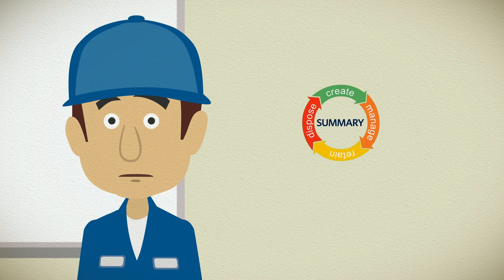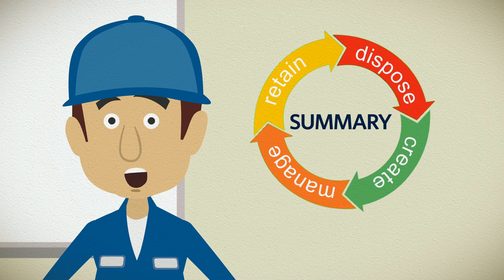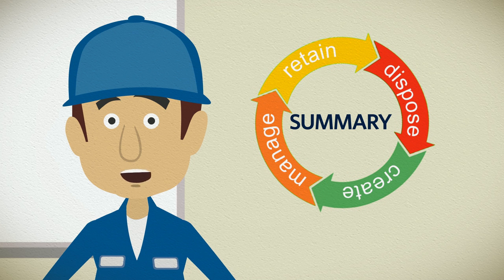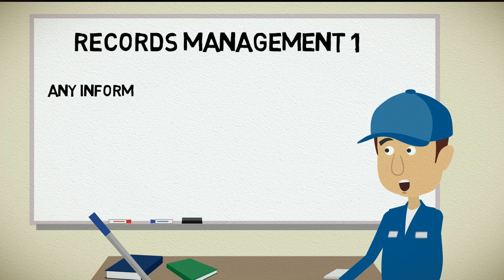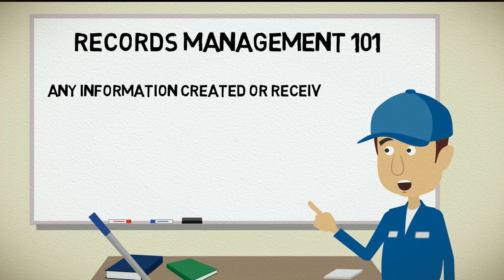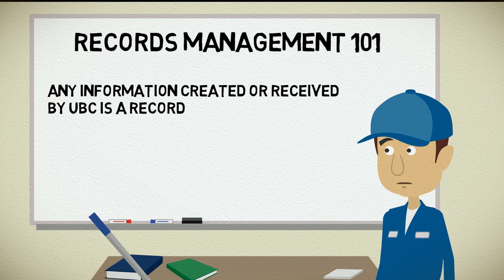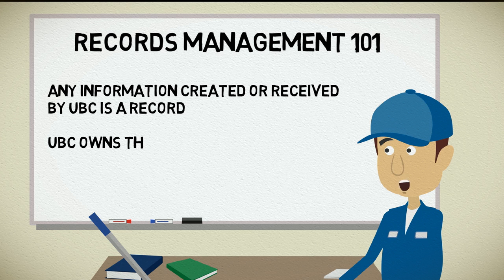In summary, a record's life cycle consists of the creation, management, retention, and disposition of university records, and any information that is created or received as part of doing business at UBC is a record.